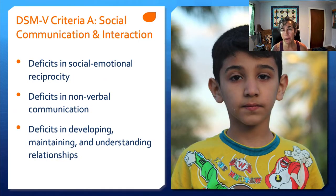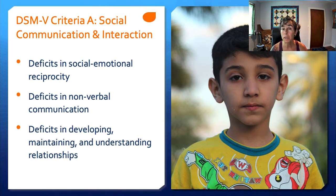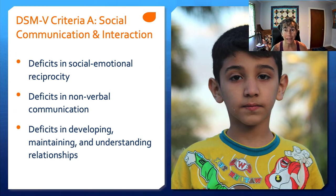Please check out the presenter notes section for more information — I'm doing a high-level overview. For those who will be working with individuals with autism, I strongly urge you to dig deeper into the disorder. Criteria A: social communication and interaction is impaired. There are deficits in social-emotional reciprocity — the give and take of social interaction — deficits in nonverbal communication such as not being able to read body language or facial expressions effectively, and deficits in developing, maintaining, and understanding relationships. We used to think that individuals with autism didn't want to interact, but that is very much not the case.